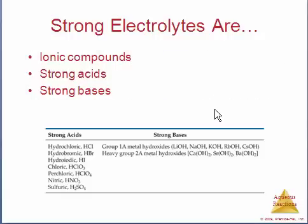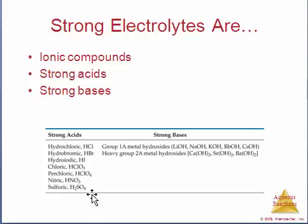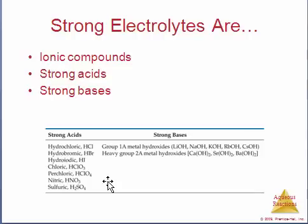It's going to be very important that you can identify strong electrolytes. Ionic compounds we identify because they always have a metal in them. There are seven strong acids — you basically have to memorize these, both the name and the formula for each. Any other acid is weak, so once you memorize the seven strong ones, all other acids are weak.